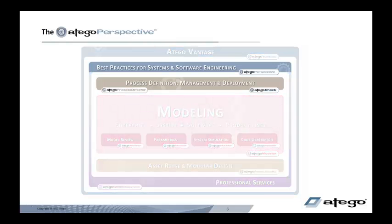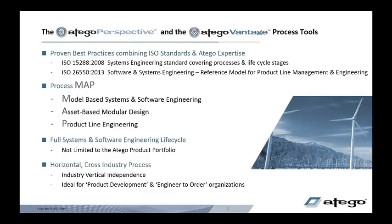Firstly, process. Our process is Otago Perspective, and we deliver this in products called Otago Process Director and Otago Check. Otago Perspective is a set of proven best practices combining ISO standards and Otago expertise, based upon ISO 15288 for systems and software engineering and ISO 26550, which is the latest standard for product line management and engineering.